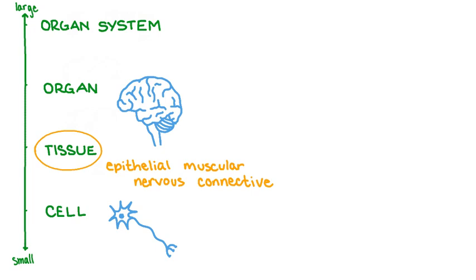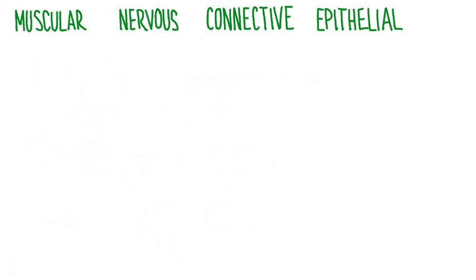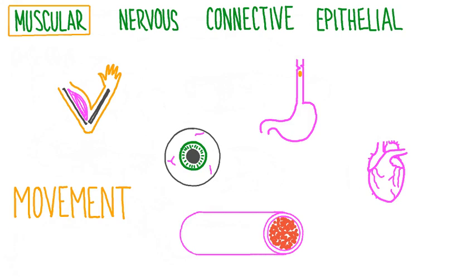There are four main types of tissues in complex multicellular animals like humans: epithelial tissue, muscular tissue, nervous tissue, and connective tissue. The human body contains approximately 11 organ systems, each possessing several organs, and each individual organ is usually made up of at least three of these tissue types. Each of the four major types of tissue is defined by its function.